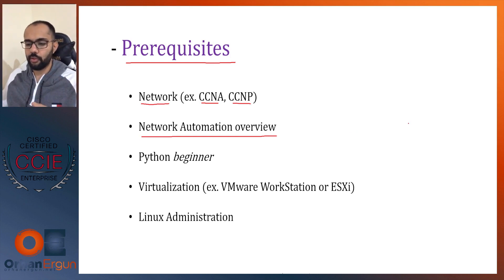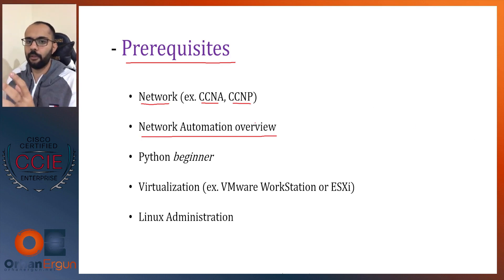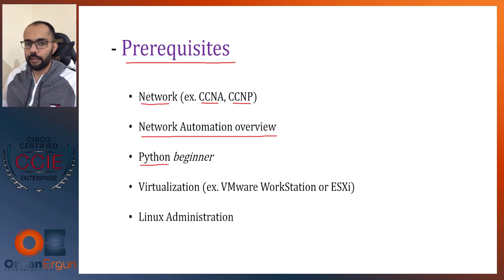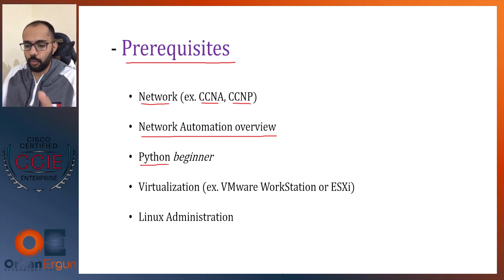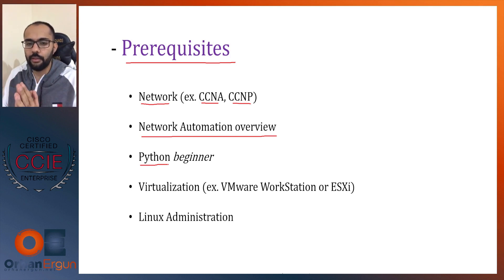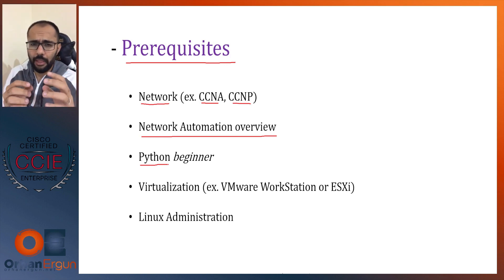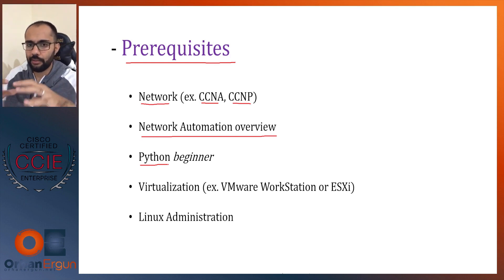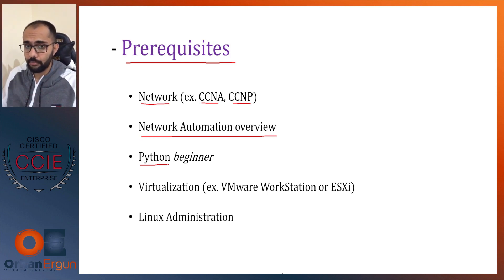The second prerequisite I always encourage is Python. Anyone who wants to start with automation should begin with Python. You will see that Python is everywhere in network automation, system automation, and more. Even Ansible itself is built with Python. Python will give you a great foundation: what is a variable, what is a loop, what is an if statement. Just a basic knowledge of Python — not a thousand lines of code — is required before you come to Ansible.